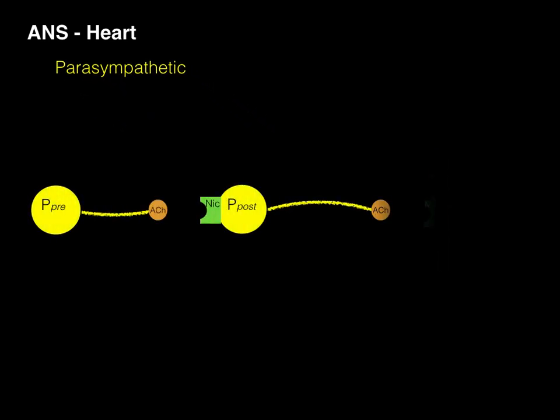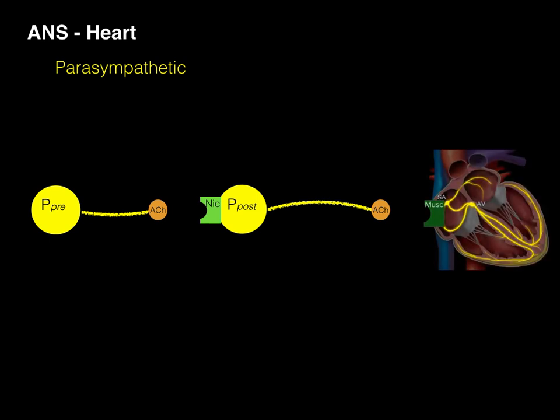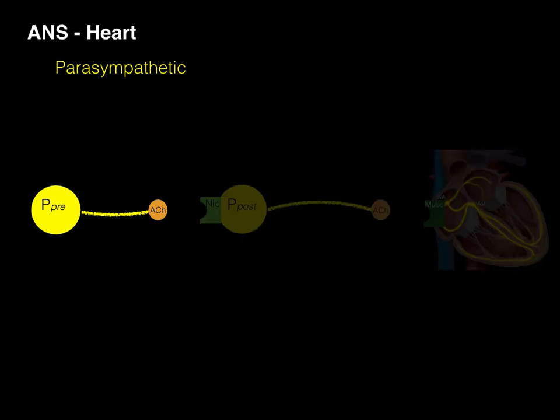Now, the second thing we'll talk about is the parasympathetic innervation. We start here with our preganglionic parasympathetic neuron, which then conducts an impulse all the way along, and then when it hits that synapse, it releases acetylcholine into that synapse number one. For parasympathetic, this synapse is in the intramural ganglia, within the actual parenchyma heart tissue itself.